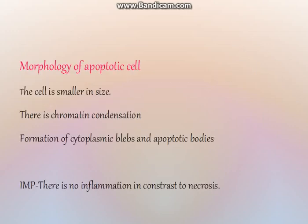The morphology of the apoptotic cell is characteristic. The cell is smaller in size — there is cellular shrinkage, in contrast to cellular swelling which is seen in necrosis. There is chromatin condensation, formation of cytoplasmic blebs, and apoptotic bodies. Importantly, there is no inflammation, in contrast to necrosis where inflammation is present.